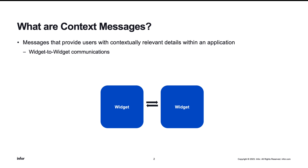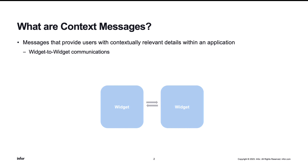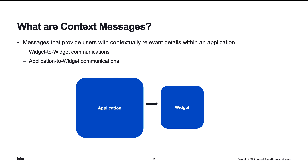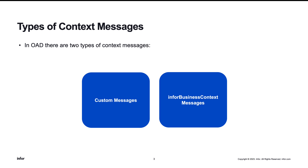What exactly are context messages and how can they be used? Context messages provide users with contextually relevant information within an application. These messages can be used for widget-to-widget communications or for application-to-widget interactions. Within OAD, there are two types of messages that can be defined: custom context messages and InforBusiness context messages.